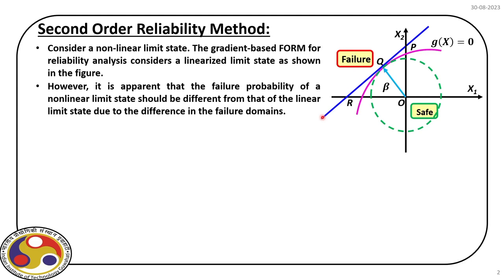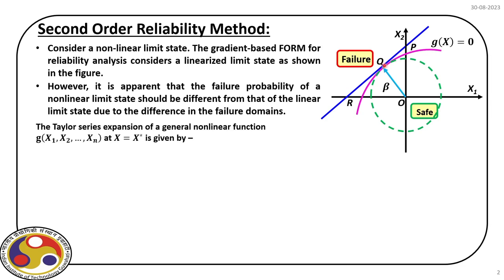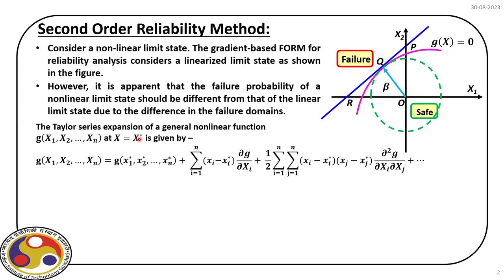This modeling error is improved in the second order reliability method, where we see how the curvature of the original limit state affects the estimation and its impact on reliability analysis. We start with a limit state function and expand it using a Taylor series, an infinite series, about a reference point x-star. On the right-hand side we have an infinite series that we truncate depending on the model used. In first order reliability analysis, we consider the first two terms — up to the first derivative of g with respect to variables x_i — and use that model for further estimation of beta.